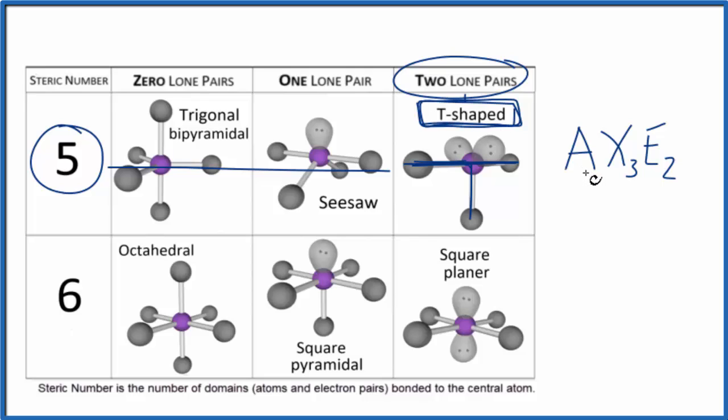Since we have five things attached on that central atom, the electron geometry would be trigonal bipyramidal. But our molecular geometry, we just look at the atoms here, we consider this T-shaped.